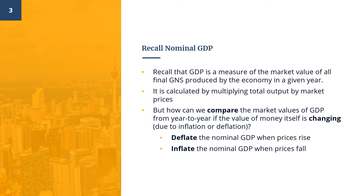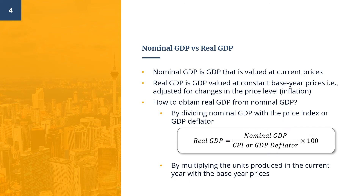This is done by choosing a reference year, often called the base year, and then using the output prices in that reference year to value the quantities of output produced in other years. Nominal GDP is GDP that is valued at current prices — that is, the GDP is calculated based on prices that prevailed when output was produced. It is also called unadjusted GDP. Real GDP, on the other hand, is GDP valued at constant base year prices; that is, the GDP has been deflated or inflated to reflect changes in the price levels. Because of that, real GDP is also known as adjusted GDP.